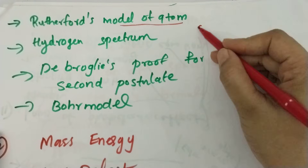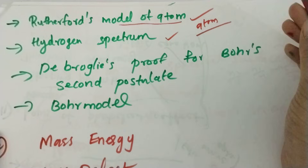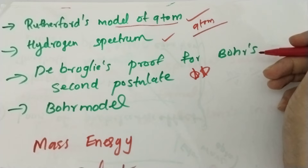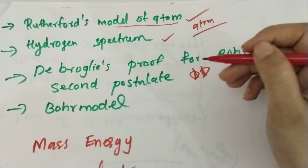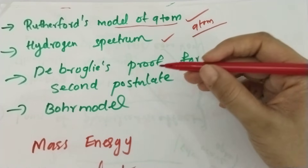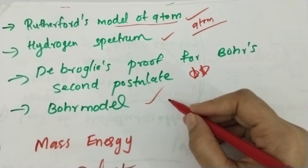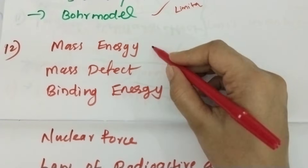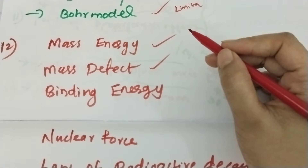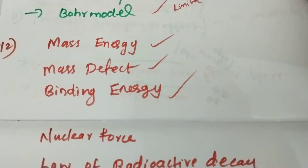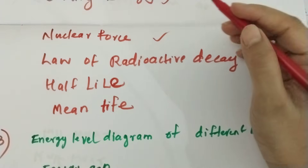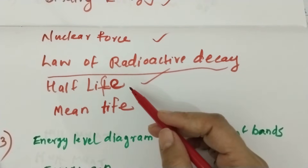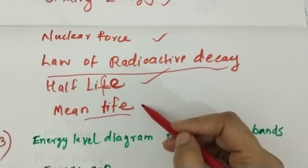Rutherford model of atoms is in the chapter. The hydrogen spectrum is in the chapter — the proof is very important. Bohr model and its limitations. There are mass-energy and mass-defect definitions. Binding energy, nuclear force properties, law of radioactive decay, half-life, mean-life — definition.